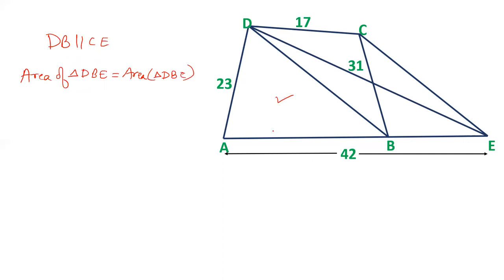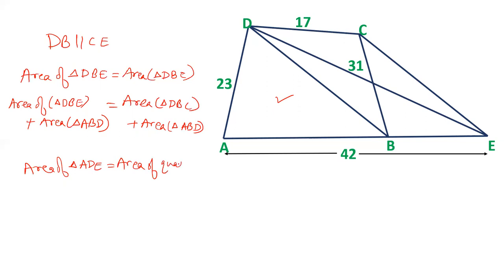And if I add area of triangle ABD on both sides: area of triangle DBC plus area of triangle ABD. I have added area of triangle ABD to both sides. Now let's check: DBE plus ABD is actually ADE, area of triangle ADE. And area of triangle DBC and ABD will be area of quadrilateral ABCD. In this question we have to calculate area of quadrilateral ABCD. That means even if we calculate area of ADE, that will be the area of ABCD.